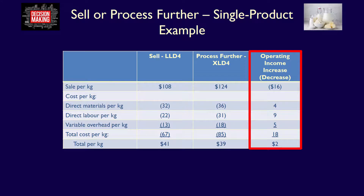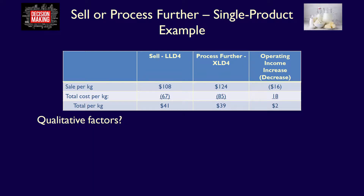The difference in column four represents the increase (if positive) or decrease (if negative) in operating income per kilogram when comparing the two alternatives. In this case, the company's operating income will increase by $2 per kilogram if they sell LLD4 as is, because the incremental costs of processing further at $18 per kilogram are higher than the incremental revenues of processing further at $16 per kilogram. Given this quantitative analysis, the company should continue to sell LLD4 as is — processing further would lose $2 per kilogram.